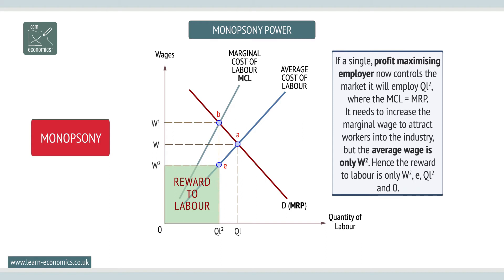Hence, the reward to labour is the area W2, E, QL2 and 0.